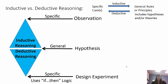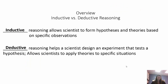We use an if-then logic. Deductive reasoning is like what Sherlock Holmes used to do — he would say the criminal is a man, men have mustaches, and John has a mustache, so John's the criminal. Inductive is the opposite: you have a specific observation and you generalize it. Inductive reasoning allows scientists to form hypotheses and theories based on specific observations. Deductive reasoning helps us design experiments to test hypotheses and apply theories to specific situations. We need them both.